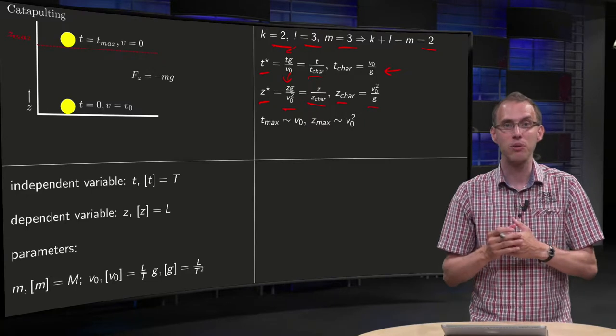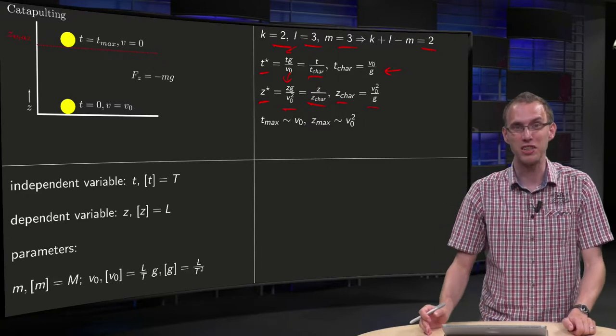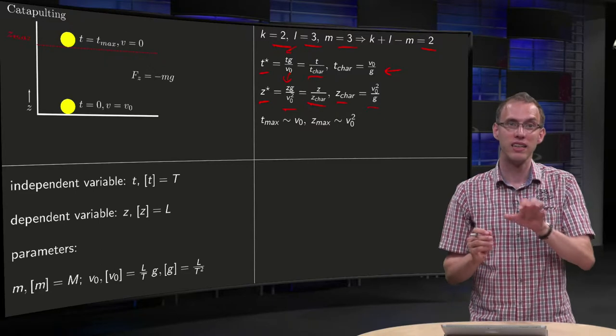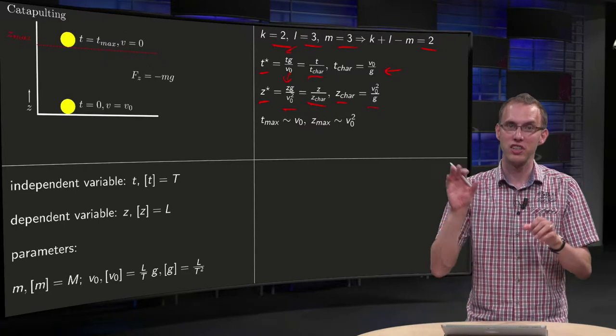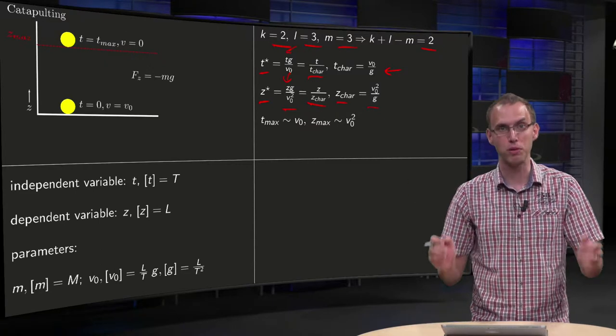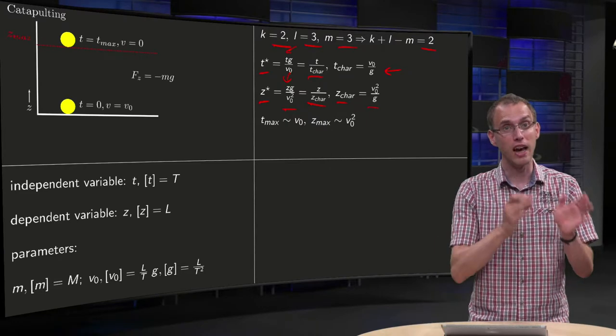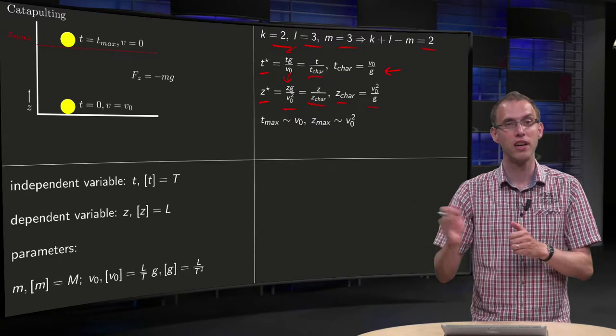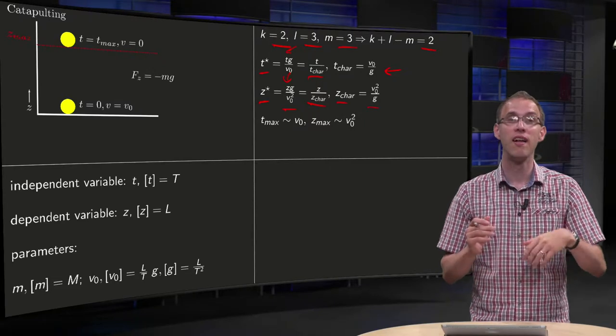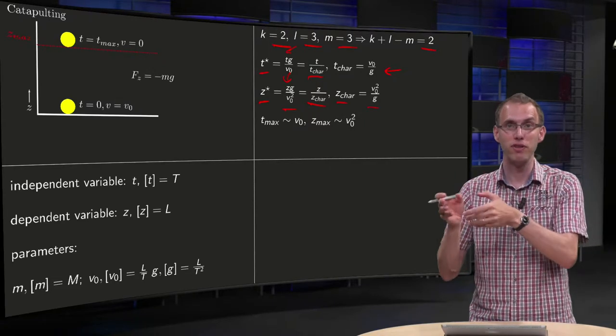And again you can sort of interpret what this z_char means. You have like g times z_char equals v0 squared. If you multiply with the mass m, you get m times g times z_char equals m times v0 squared.